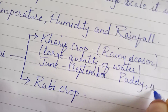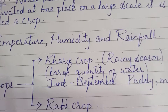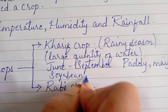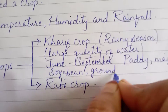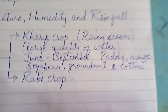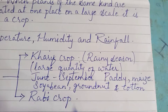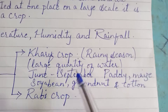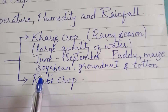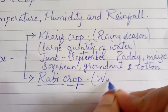maize, soya bean, groundnut, and cotton. These crops require a large quantity of water, hence they are grown in the rainy season, which in India is generally from June to September. These are named Kharif crops.